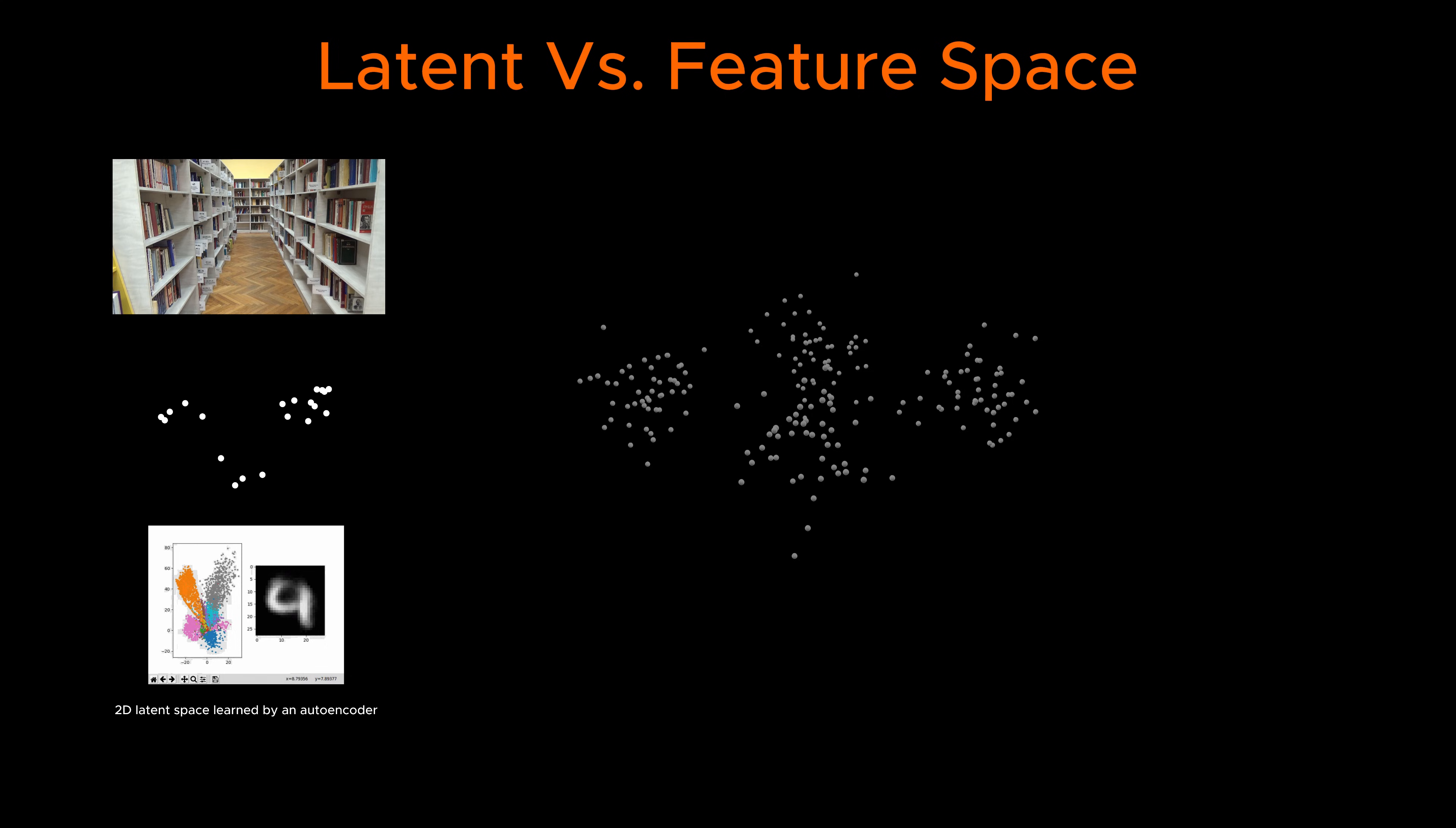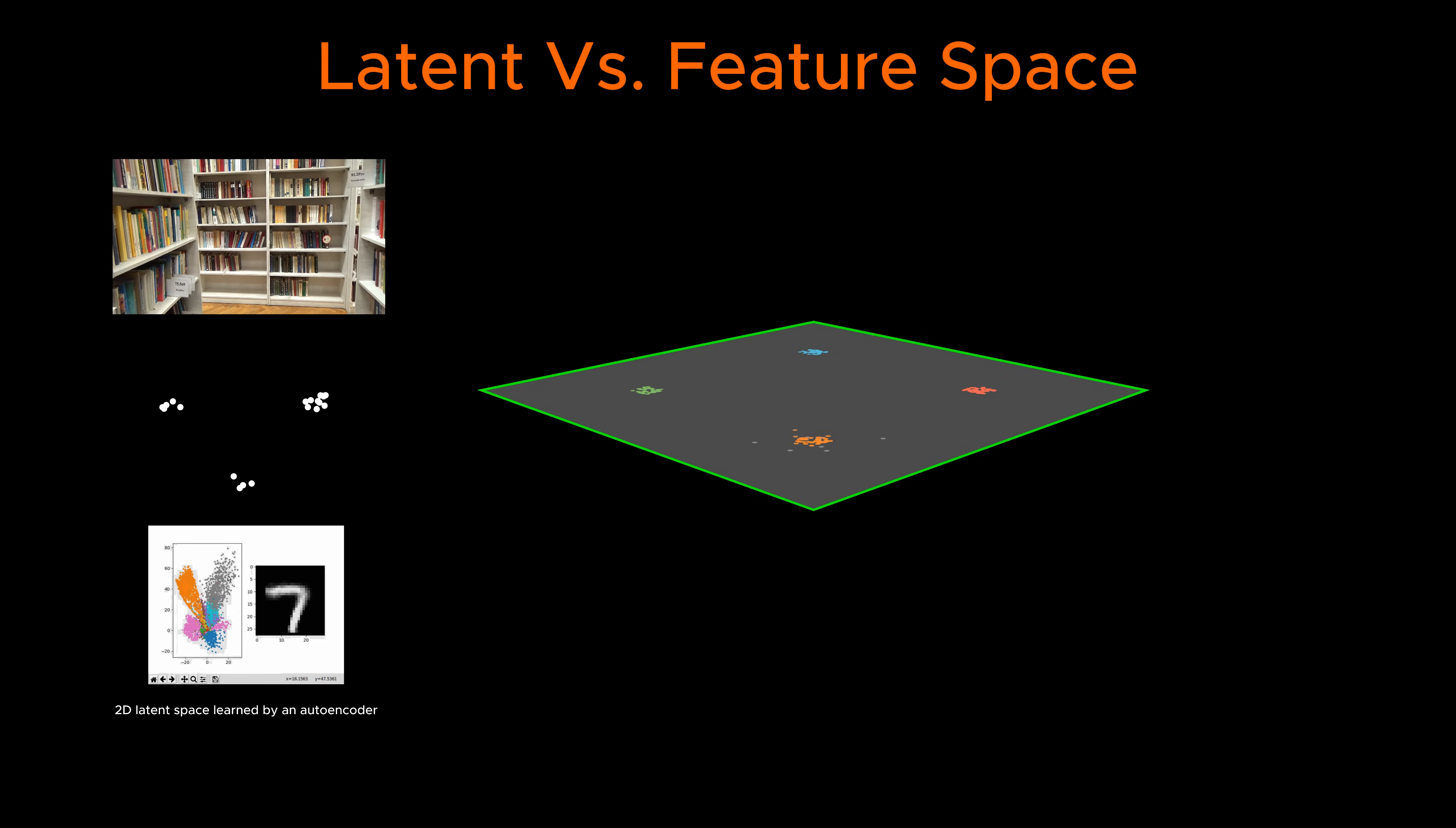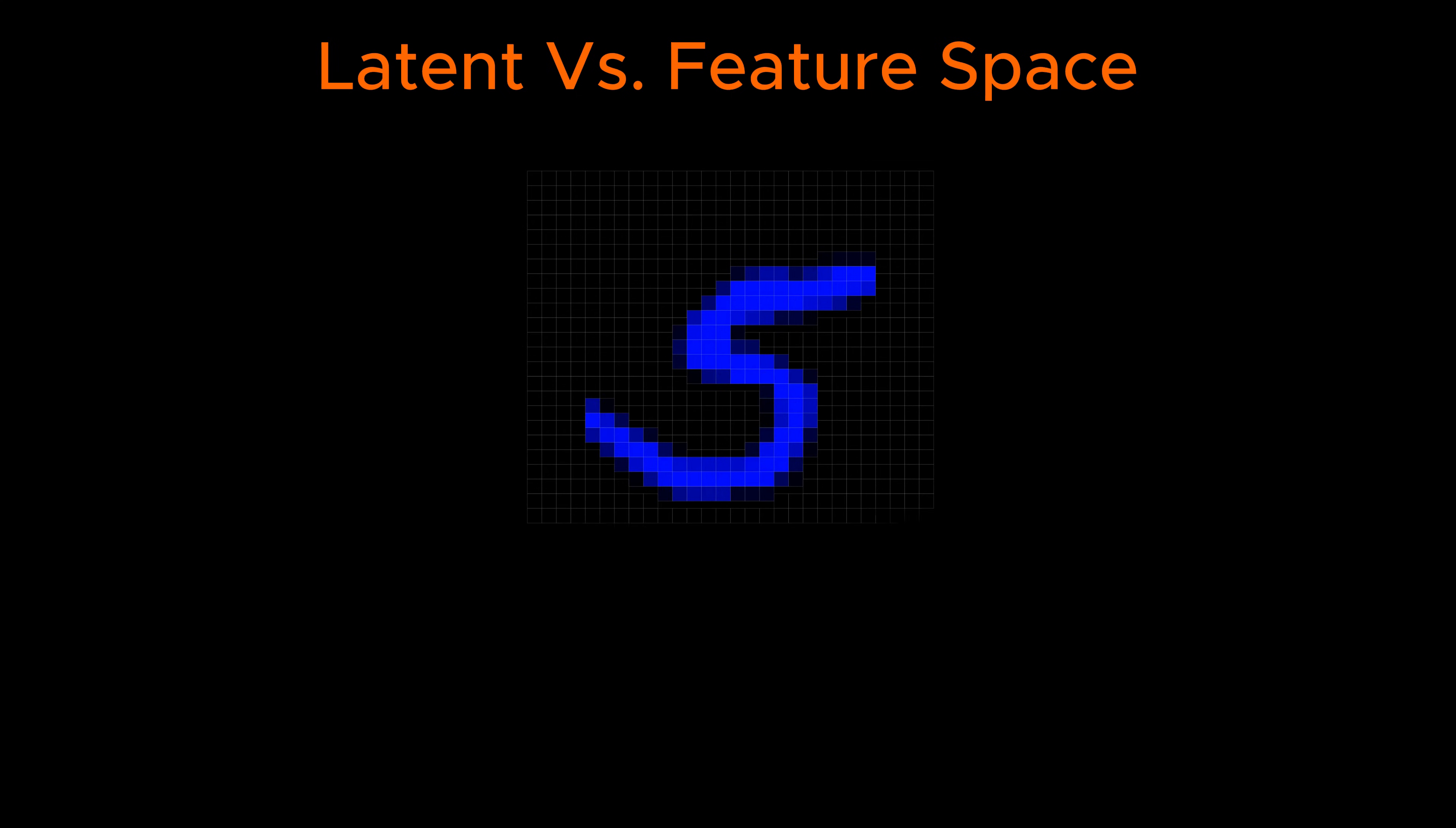At its core, latent space is a lower-dimensional representation of data that retains only its most essential features. Instead of working with raw, high-dimensional data, machine learning models map inputs to a latent space where similar data points are closer together. This transformation to a lower dimension allows models to analyze, interpret, and generate insights more efficiently. One way dimensionality reduction creates latent space is by compressing information.